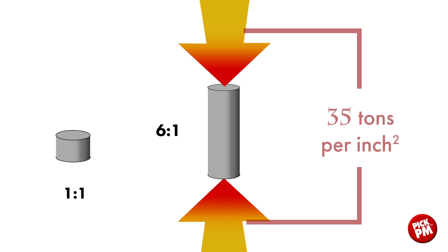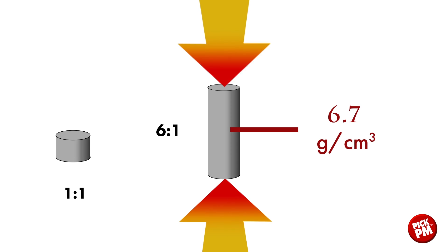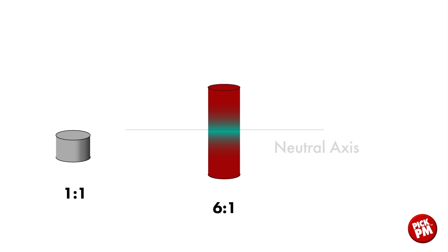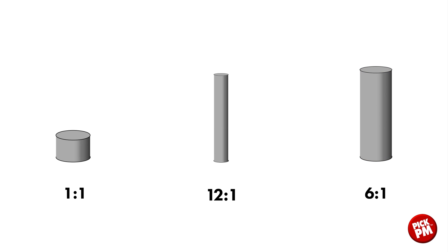If we apply 35 tons per square inch to that component, we can achieve a 6.7 grams per cubic centimeter density. What we end up with is a density divide or density split called a neutral axis, approximately right in the middle of that column. This assumes that we compact from both ends. That neutral axis is lower density than the ends of the component. Moving to the middle example, we see an aspect ratio of approximately 12 to 1.